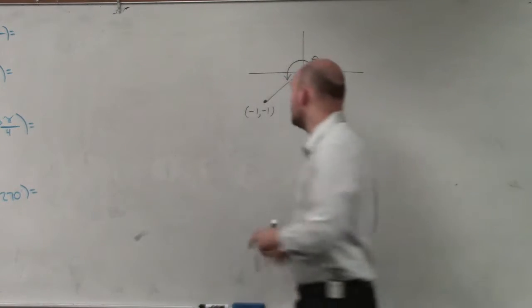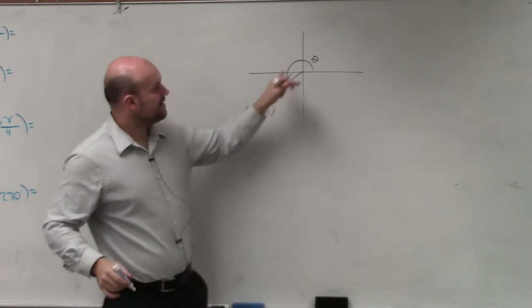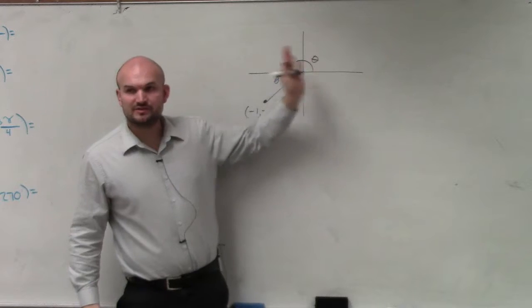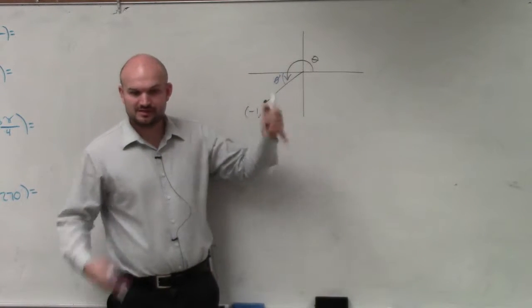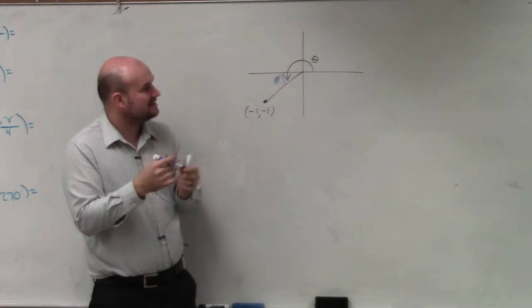So that means this reference angle right here, the reference angle and that angle are going to give you the same coordinates on the unit circle. If you guys look at the unit circle, this point and that angle are going to be exactly the same.